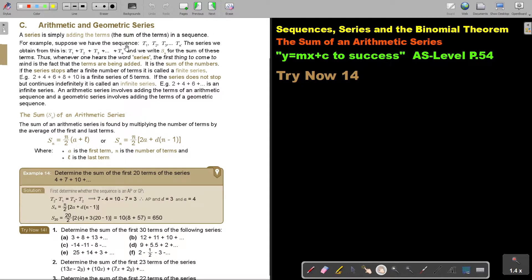Arithmetic and Geometric series. Let's first look at the difference. A series is simply adding the terms, the sum of the terms in a sequence. For example, suppose we have the sequence this, the series we obtain from this is if we start adding all the terms.